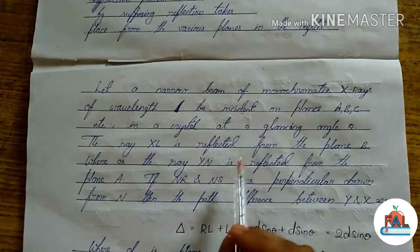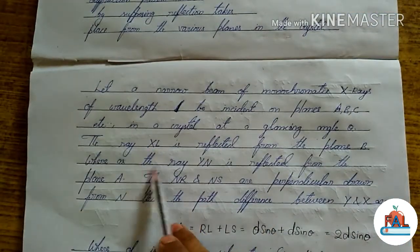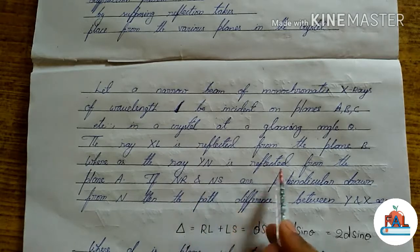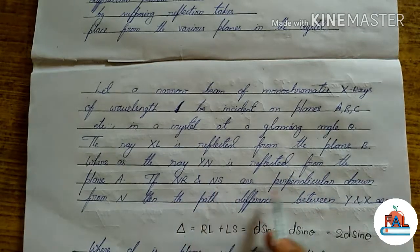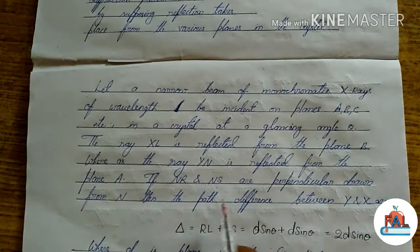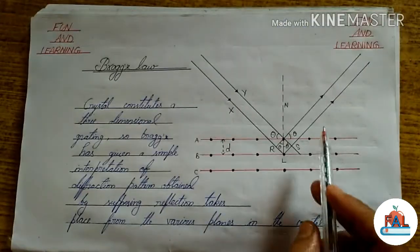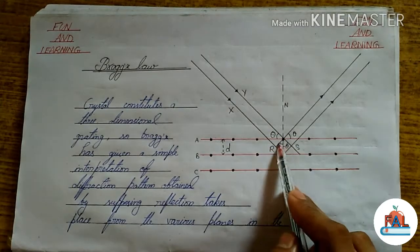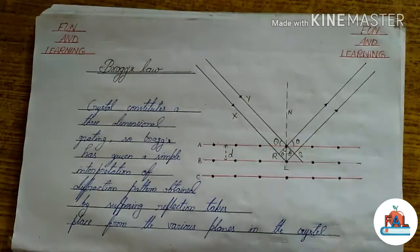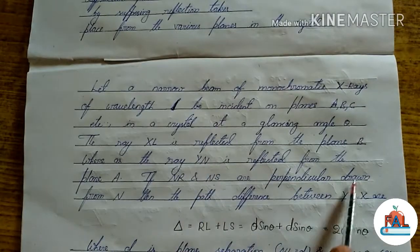If N-R and N-S are perpendiculars drawn from N, where is N-R, where is N-S? This is N-R and this is N-S, and they are perpendicular to each other.